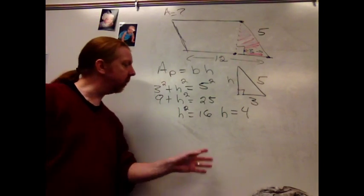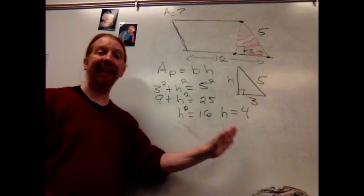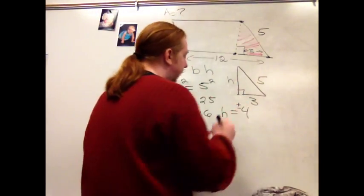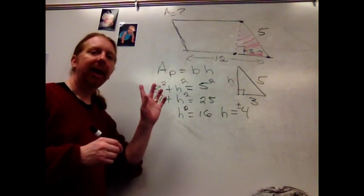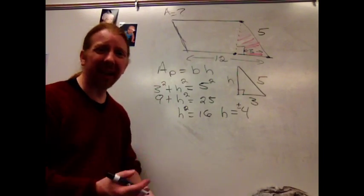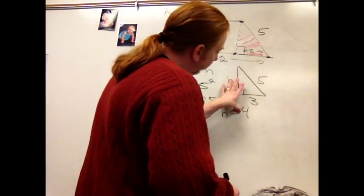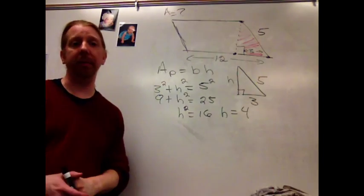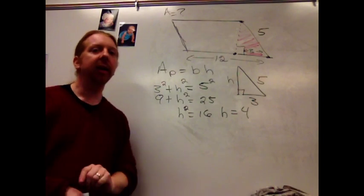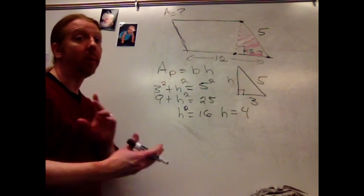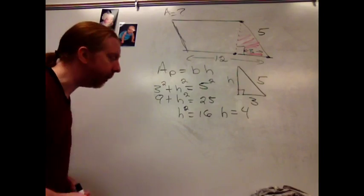In an algebra setting, you really want to talk about positive or negative 4, because we took the square root. In a geometry setting, we don't use negative measurements. Figures cannot be negative 4 inches long, so we don't worry about that negative, but there's a caution. If this is an algebra class, you want to be aware there are always two answers to square roots.